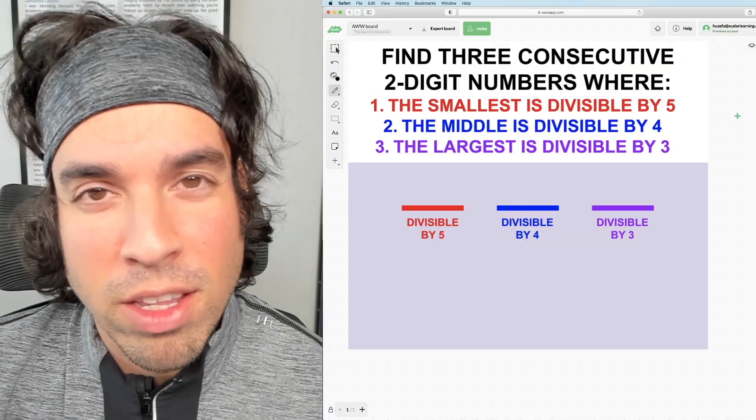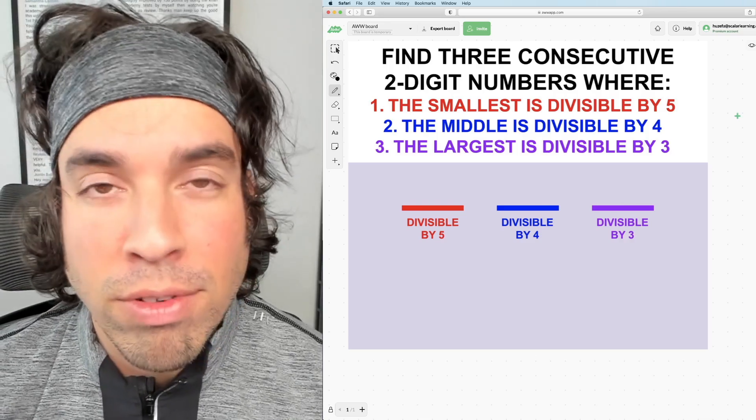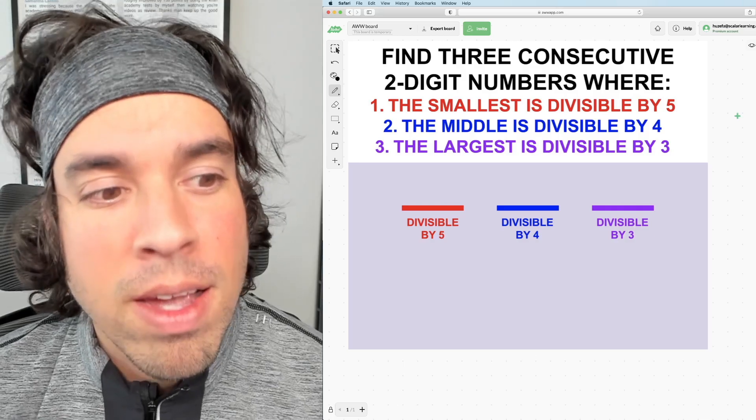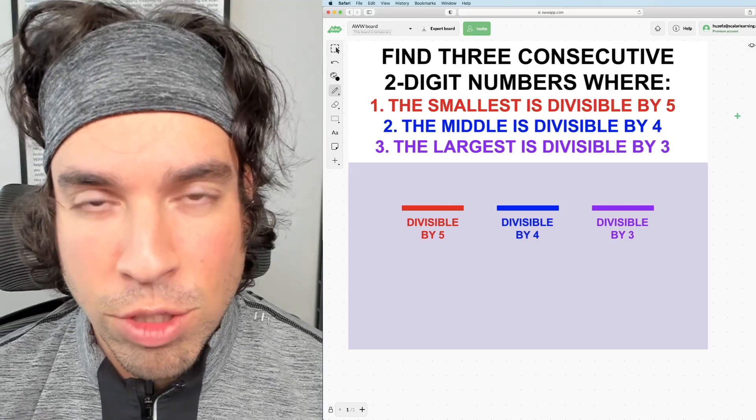What's up everybody and welcome back to another math puzzle. In this one we are asked to find three consecutive two-digit numbers where the smallest is divisible by five, the middle one is divisible by four, and the largest is divisible by three.